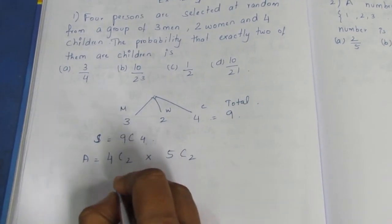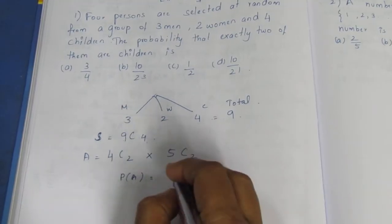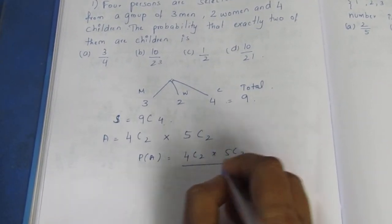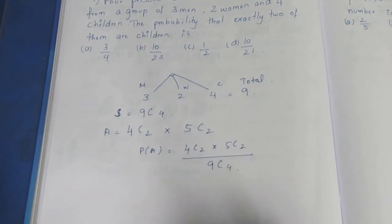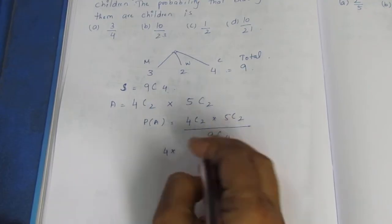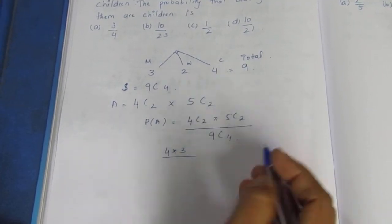So probability P(A) is 4C2 multiplied by 5C2 divided by 9C4.